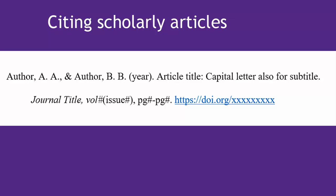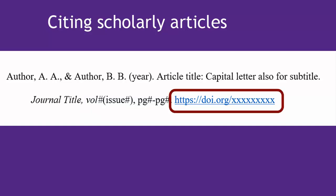Citing articles is similar to citing books, except you need a little bit more information. In addition to the author and date of publication, you need the article title, journal title, volume and issue number if applicable, the page range of the article, and the digital object identifier known as the DOI.